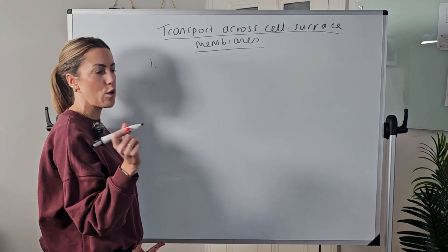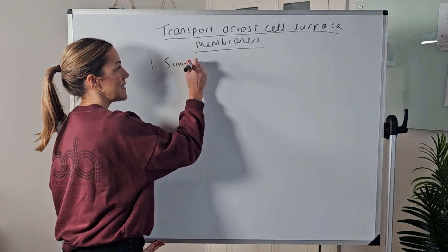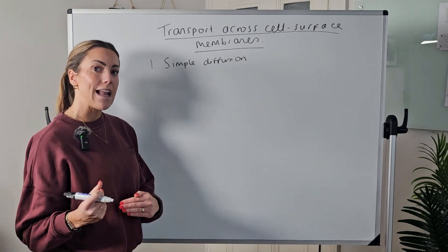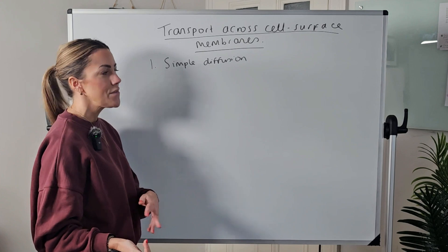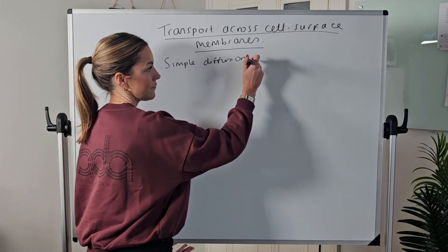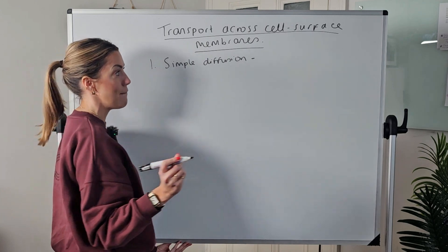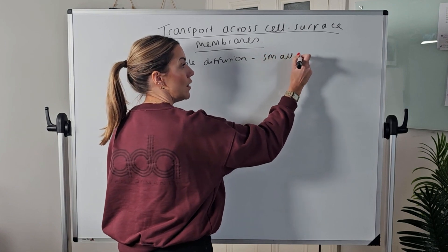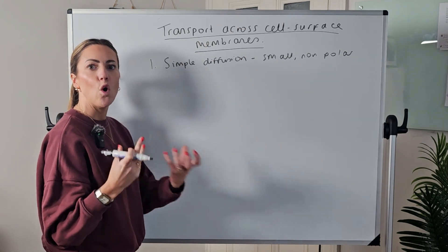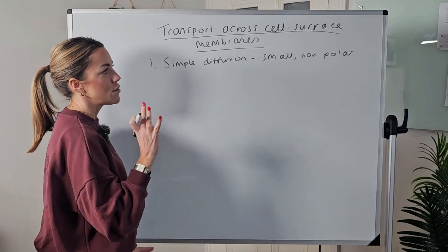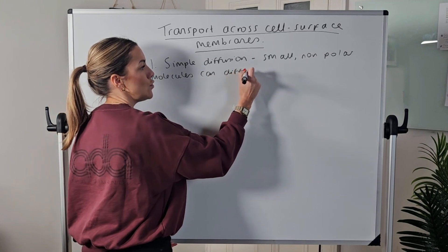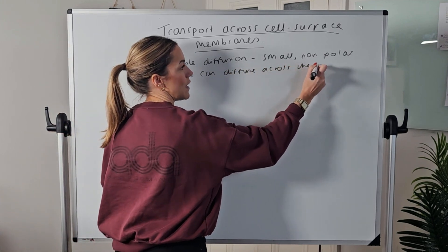The first method of transport we need to know about for A-level is simple diffusion. You learned about this at GCSE, you just called it diffusion, but now at A-level we know that there are two different types of diffusion so we're going to differentiate between them and call the first type simple diffusion. Simple diffusion across the cell surface membrane is the diffusion of small non-polar molecules or substances with no uneven distribution of charge. These small non-polar molecules can diffuse across the phospholipid bilayer.